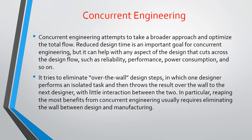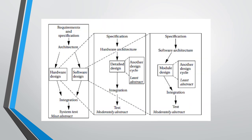The next one is concurrent engineering. To reduce design time, we use this concurrent engineering model — reducing design time is its most important goal. It tries to eliminate the over-the-wall design steps, where one designer performs an isolated task and throws the result over the wall to the next designer with little interaction. In concurrent engineering, this wall is eliminated and there is great interaction between designers. The overall process goes from requirements and specification, to architecture, hardware design, software design, integration, and system test.